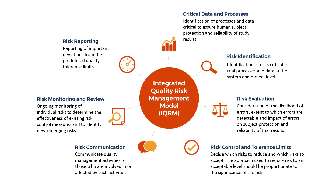Risk control: The sponsor should decide which risks to reduce and which risks to accept. The approach used to reduce risk to an acceptable level should be proportionate to the significance of the risk. Risk reduction activities may be incorporated in protocol design and implementation, monitoring plans, agreements between parties defining roles and responsibilities, systematic safeguards to ensure adherence to standard operating procedures, and training in processes and procedures. Pre-defined quality tolerance limits should be established, taking into consideration the medical and statistical characteristics of the variables as well as the statistical design of the trial, to identify systematic issues that can impact subject safety or reliability of trial results. Detection of deviations from the predefined quality tolerance limits should trigger an evaluation to determine if action is needed.